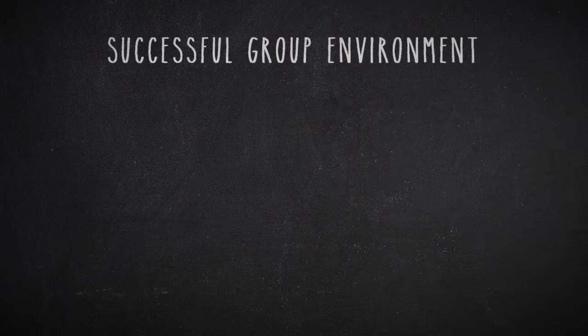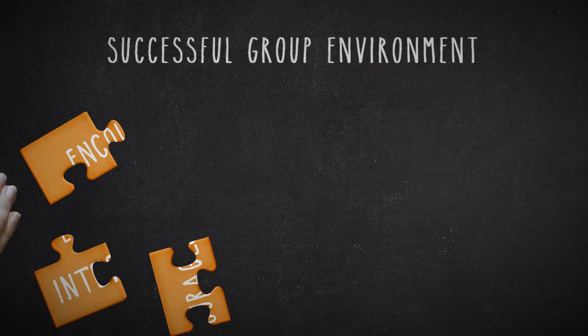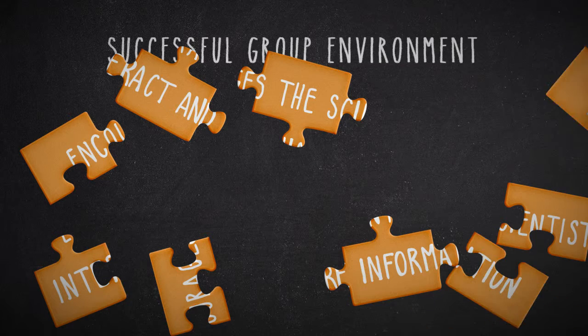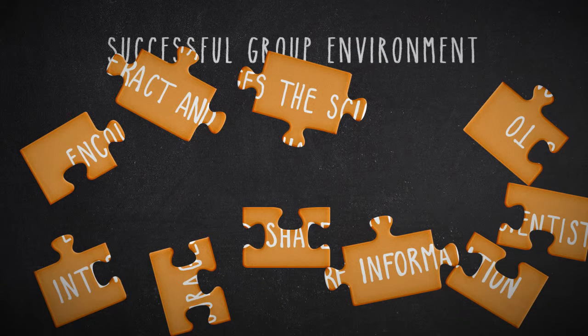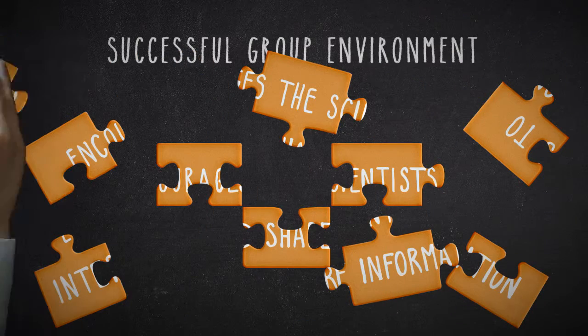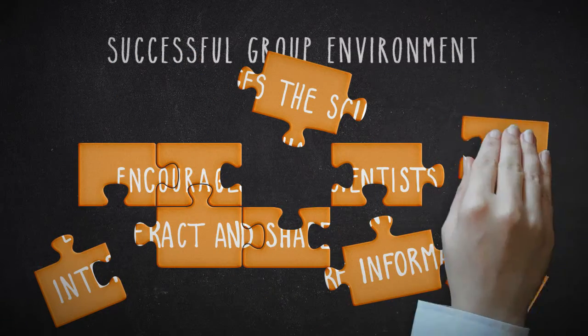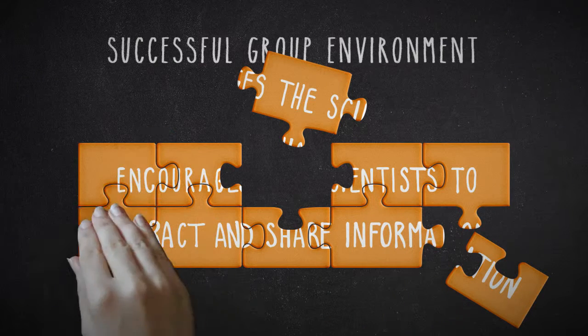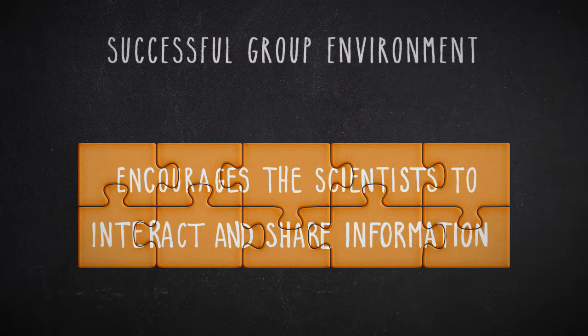An example of a highly successful group environment is a lab where research teams don't rely on chance encounters between their lab members. They, instead, organize and develop room and spaces for collaborative, creative work. So, the environment itself will encourage the scientists to interact and share information.